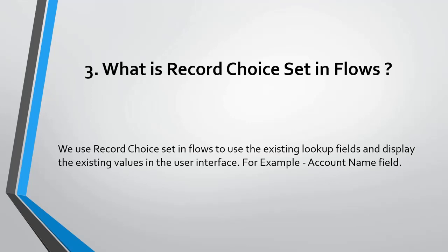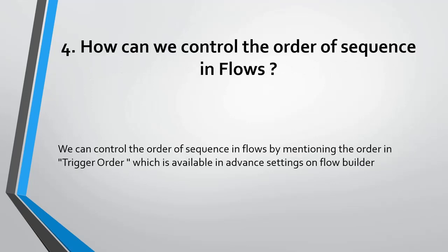What is a record choice set in flows? We use a record choice set in flows to use the existing lookup fields and display the existing values in the user interface — for example, the account name field.